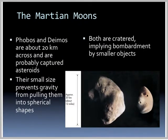Mars has two moons — Phobos and Deimos. They are about 20 kilometers across — around 12 miles — and are probably captured asteroids. Their small size prevents gravity from pulling them into spherical shapes. They are both cratered, implying bombardment by smaller objects.